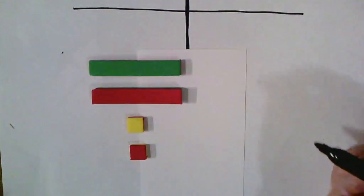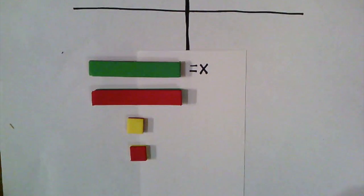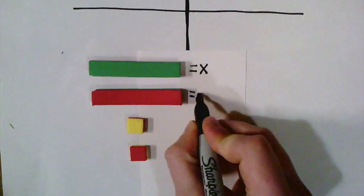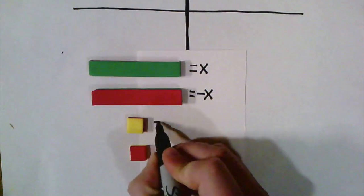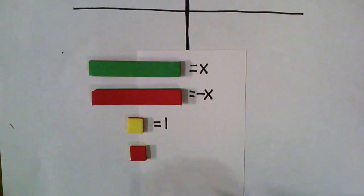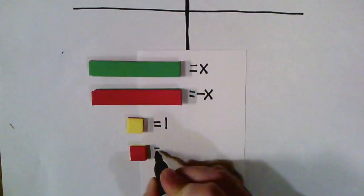So this green bar up at the top, this is going to be mostly referred to as x, a positive x. It could be any variable that we don't know the value of. The red bar right below it is what we're referred to as a negative x. And then this yellow is just going to represent one, positive one, and the red below it, the little red, is going to represent a negative one.